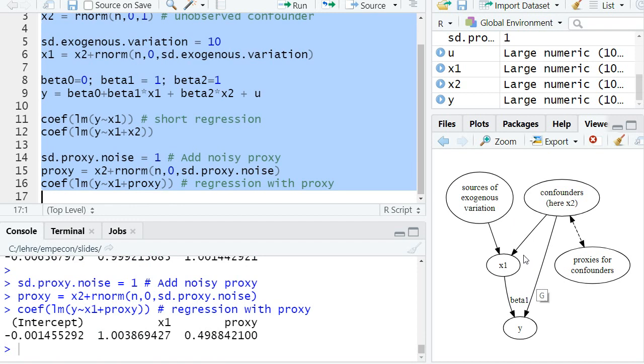So it's always kind of a relationship: how precisely can we control for the confounders with our proxies, and how much exogenous variation do we have in x1? That in the end determines the bias of our OLS estimator.